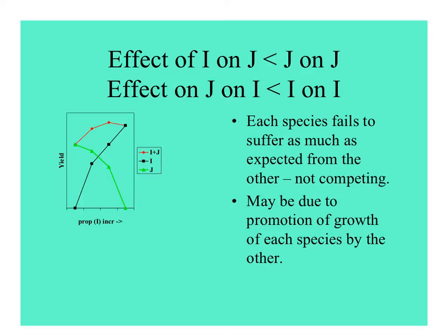Each species can also suffer less in the presence of the other than expected — this can happen if the presence of one promotes the growth of the other, resulting in a yield greater than the expected yield from pure stands.